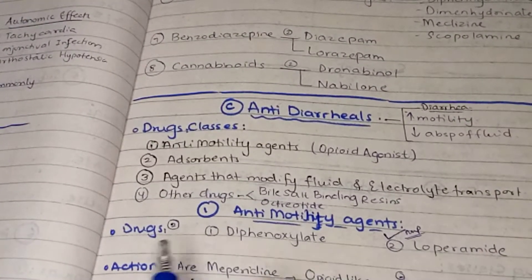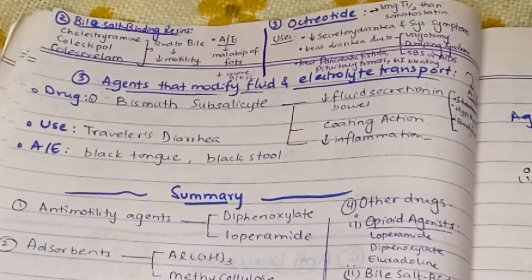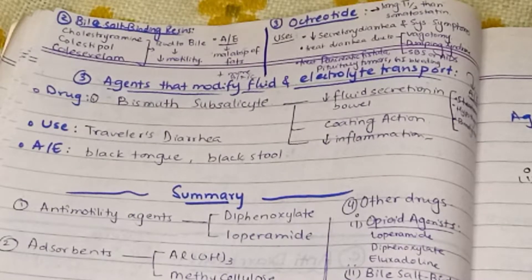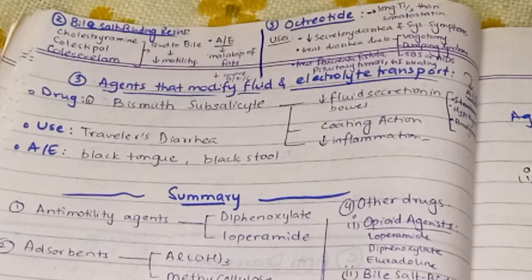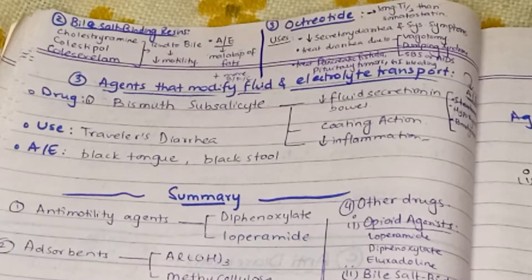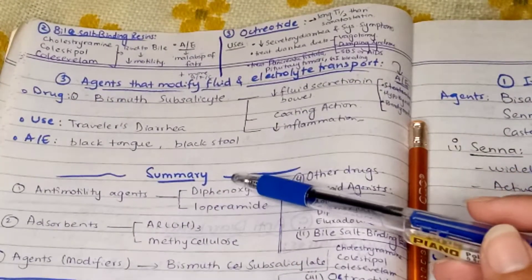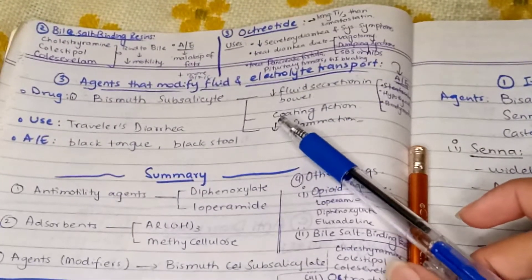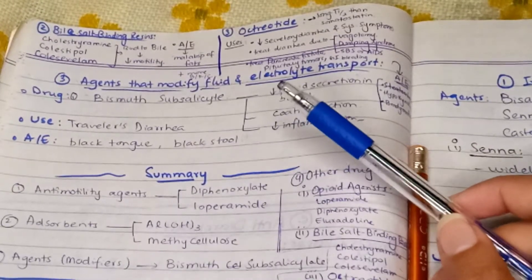Now coming towards the other drugs category, we have bile salt binding resins and octreotide. Conjugated bile salts are normally absorbed in the terminal ileum. If there is any disease of the terminal ileum — for example, Crohn's disease — or surgical removal of that part, that can lead to malabsorption of bile salts, which in the colon can cause colonic secretory diarrhea. The drugs in this category include cholestyramine, colestipol, and colesevelam. These drugs bind to bile and decrease motility. Adverse effects include malabsorption of fats, flatulence, constipation, and bloating.